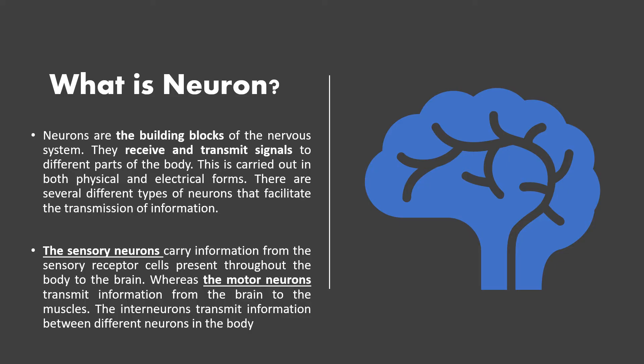Sensory neurons carry information from sensory receptors — receptor cells present throughout the body — to the brain. Motor neurons transmit information from the brain to the muscles. Interneurons transmit information between different neurons in the body.